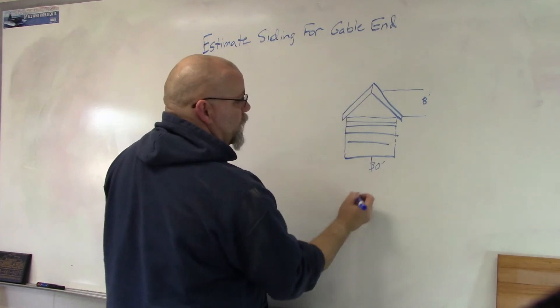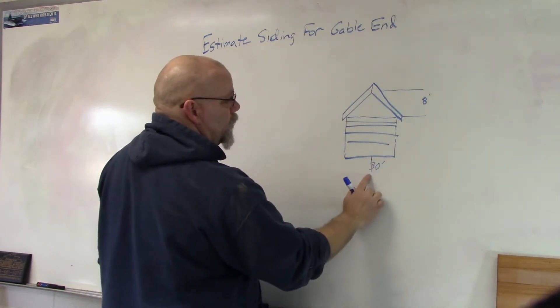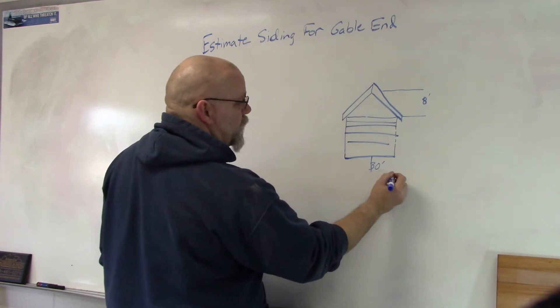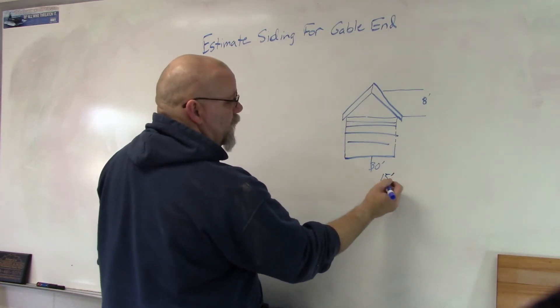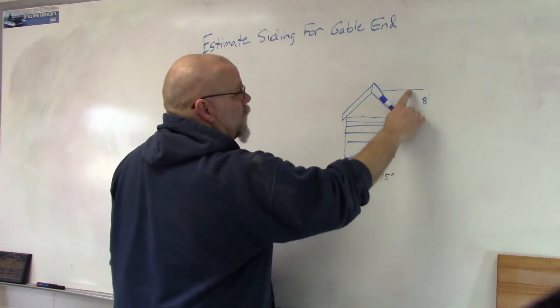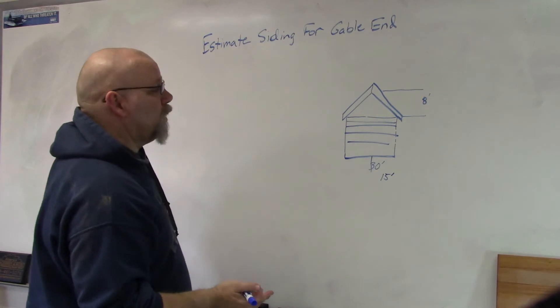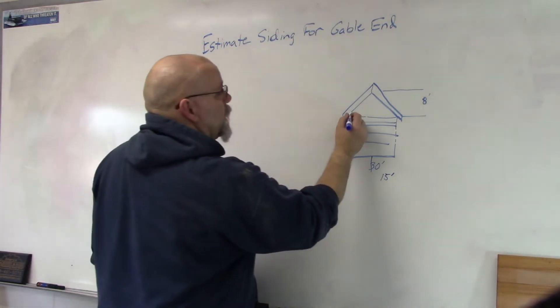What we need to figure this out is what half of that distance is. So the span is 30 feet, our total run would be half of that, so it would be 15 feet. And then we need the height of it. In this case I gave it a height of 8 feet, so we're going to end up putting rows of siding in here.